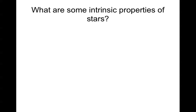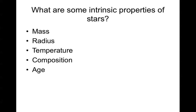So what are some of the intrinsic properties of stars? We have mass — how much material is in the star altogether — radius, how big the star is, temperature, how hot the outer surface of the star is, composition, what the star is made of, which elements and in what abundance are present, and age, how old the star is. All of these are quantities independent of where you are or how fast you're moving when you're looking at the star. These are intrinsic to the star; they are inherent in its very nature.